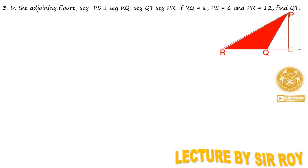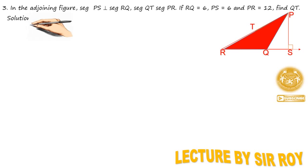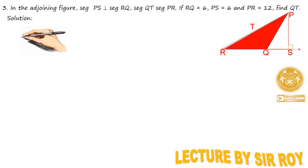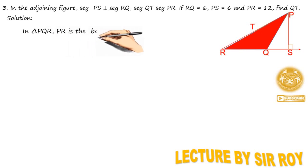Solution में लिखेंगे: in triangle PQR. यहाँ पे जो red color का triangle दिखाई दे रहा है वो एक obtuse triangle है। मैं इसी triangle को obtuse से acute में भी बदल दूँगा। In triangle PQR, यहाँ पे base क्या है — PR base है।